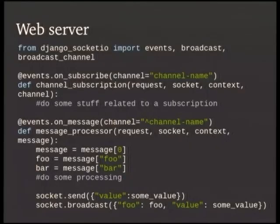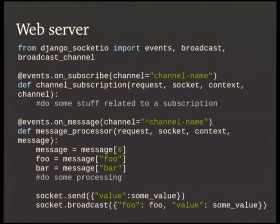To show you how this works in code — I'm a Python guy, I work with Django day in, day out. I use a library called Django Socket.io, but the principles hold true if you prefer Node.js or something like that. You can see here I've got code that responds when I get a channel event. I've got someone subscribing to my channel and I do some stuff related to that. Then I've got a message event where someone's sending me a message — I pull some data out of it, and then I can either send that message back to the originating client or broadcast it out to everybody listening on that channel.